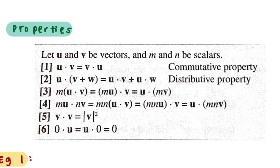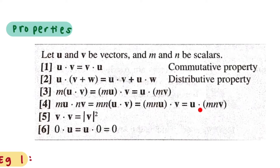Now let's see property three. If you have m as your scalar, m can be factorized outside and inside you have u dot v. This is the same as mu dot v, or u dot mv. For property four, with two scalars m and n, you can write mu dot nv, or factorize m and n outside leaving u dot v, or apply mn to u then dot with v, or write u dot (mn times v).